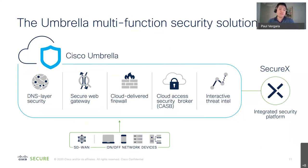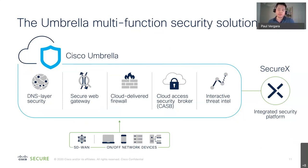For those who haven't used Umbrella for DNS layer security yet, the concept is really simple. If you make a request to a site and it's safe or the policy allows it, we'll deliver back the IP address for that site. But if the destination comes back as malicious or violates policy, instead of sending back the IP address, we just deliver back a block page. Very simple concept.